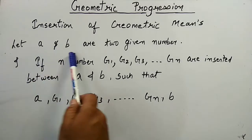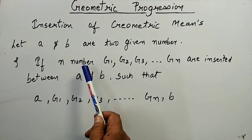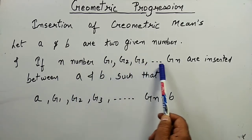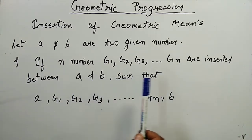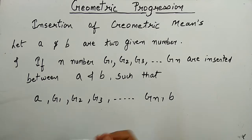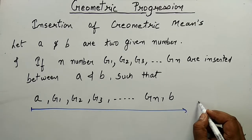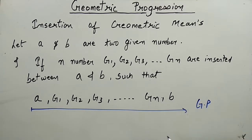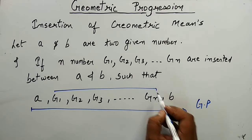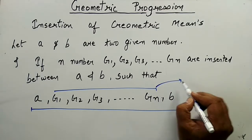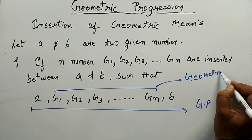Let a and b be two given numbers. If n numbers — g1, g2, g3 up to gn — are inserted between a and b such that the resulting sequence becomes a GP, then all such numbers inserted between a and b are known as geometric means between a and b.